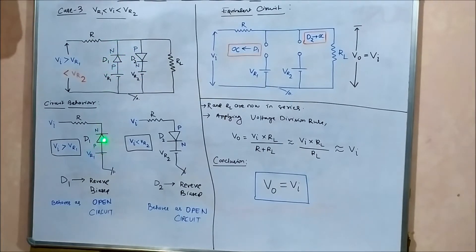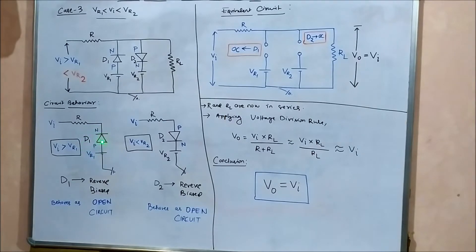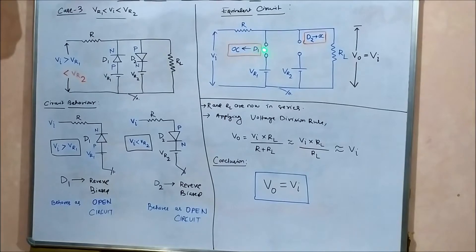For diode D1: the N-end is connected to Vi and the P-end to Vr1. Since Vi is greater than Vr1, the N-end is connected to a higher voltage Vi and the P-end to a lower potential Vr1. A diode with its P-end at lower potential and N-end at higher potential is reverse biased, so D1 behaves as an open circuit.